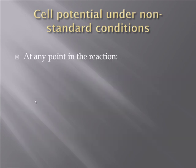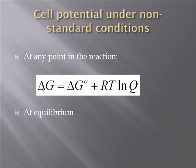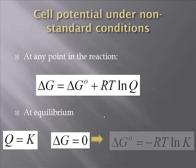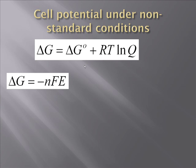Now let's look at what happens to this equation when you're at equilibrium. If you're at equilibrium, Q equals K, and delta G, the driving force, has gone to 0 — there's no further driving force for any more chemical changes. Making those two substitutions — replacing Q with K and setting delta G to 0 — this becomes: delta G0 equals minus RT ln K.